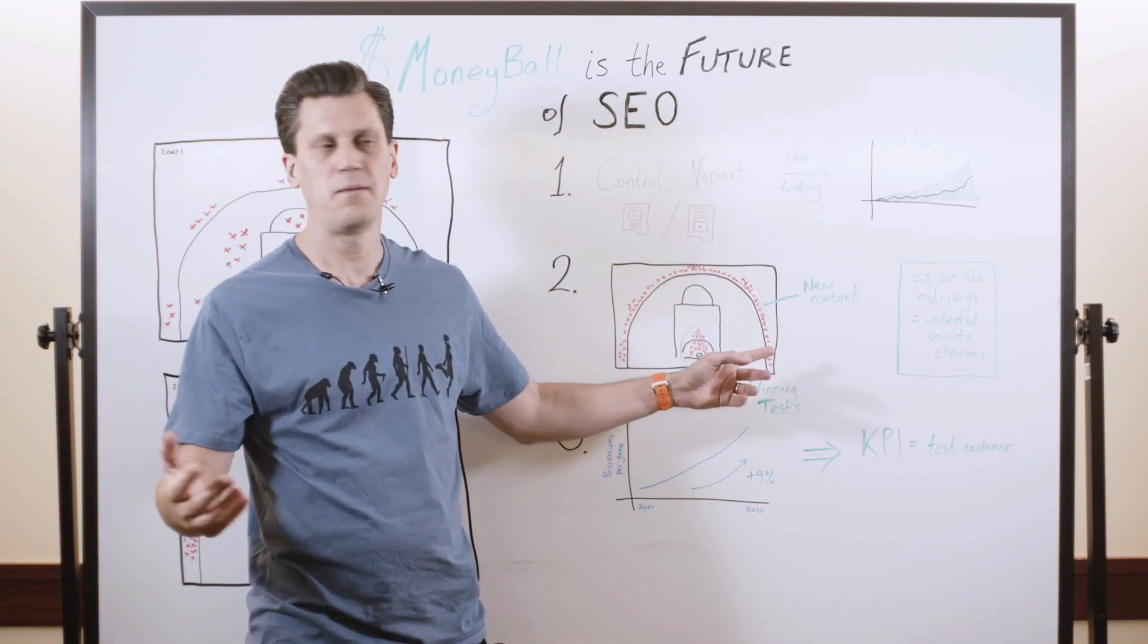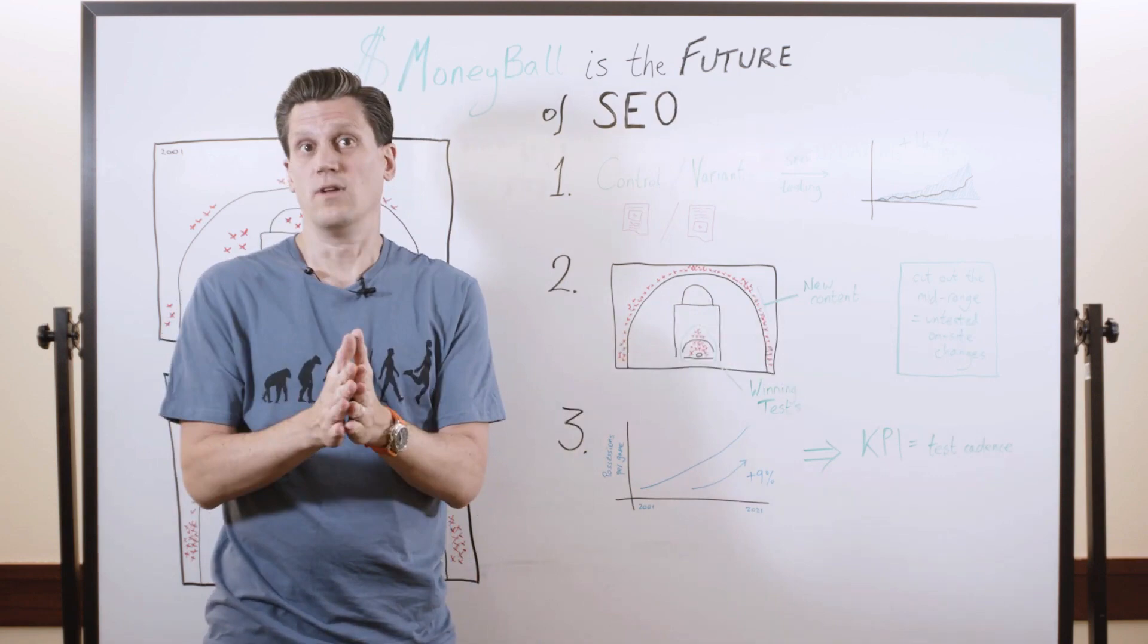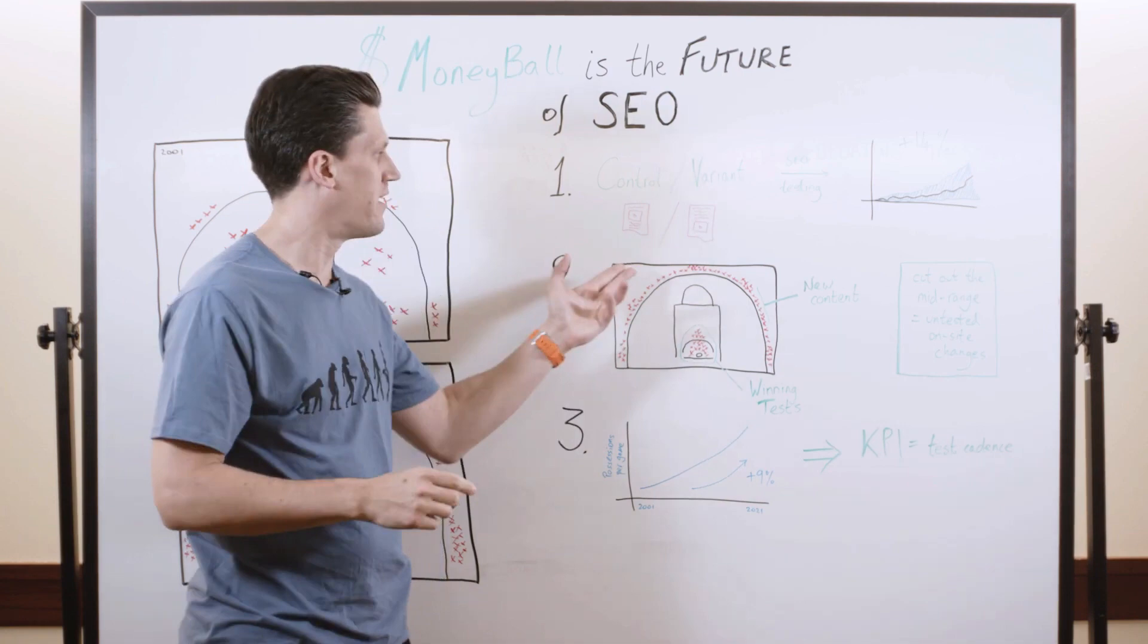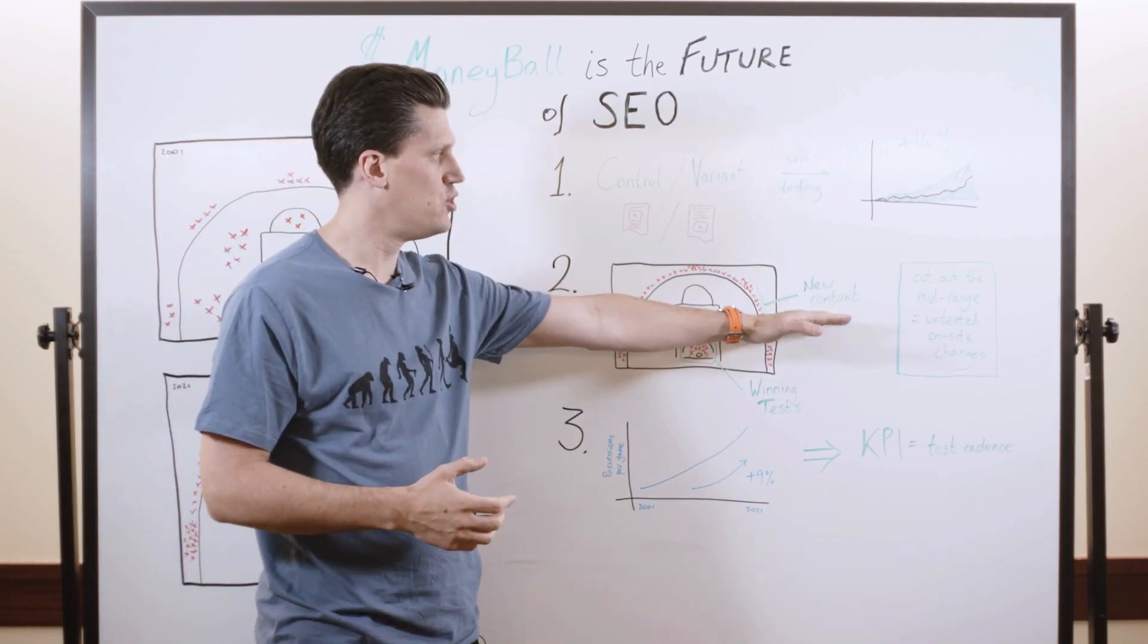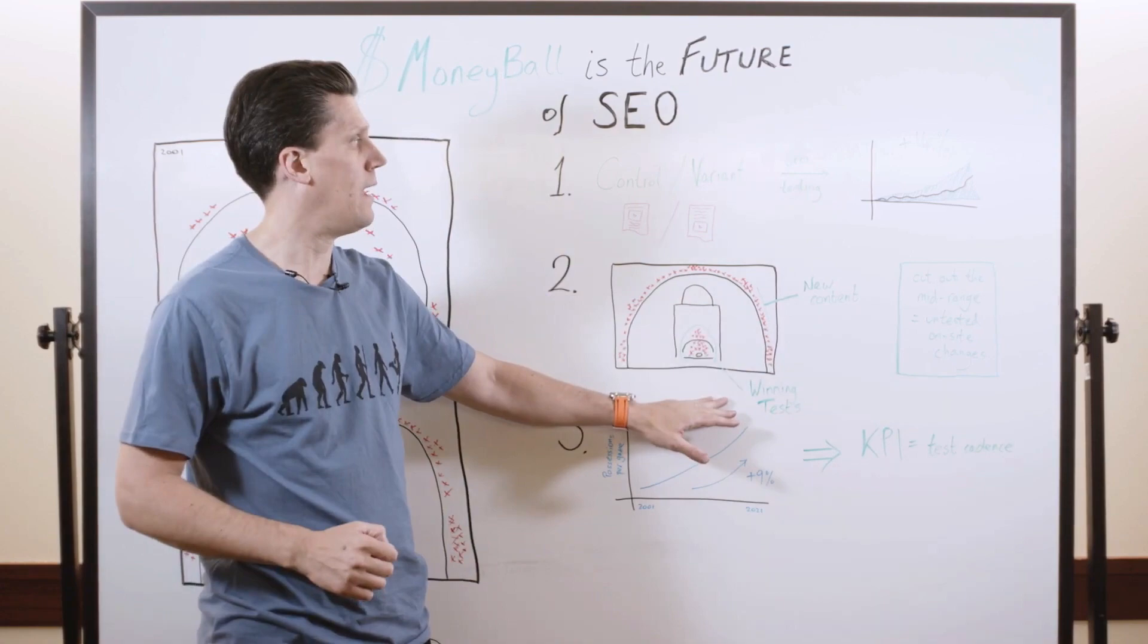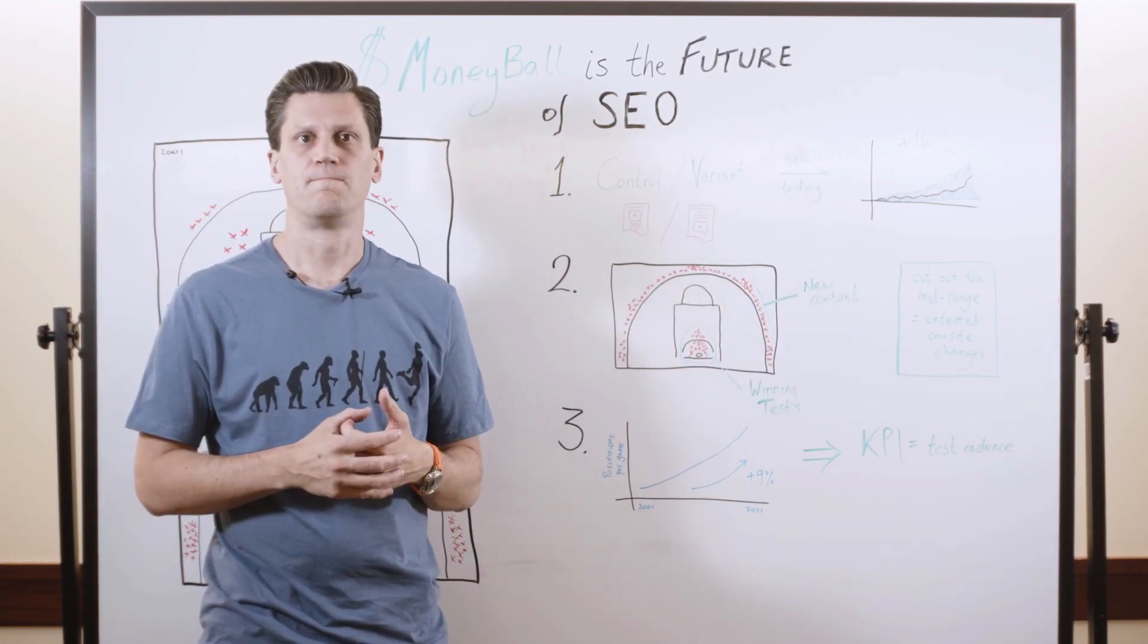So new pages, new site sections, super valuable. If you don't build out new content, you're going to struggle over time. But super hard as well, just like the three-point shots are in the game. They're harder, but they're worth more. So you build the strategy of building out new content and rolling out winning tests, which are your dunks. And you cut out the mid-range, which are all those little tweaks, all those untested on-site changes.